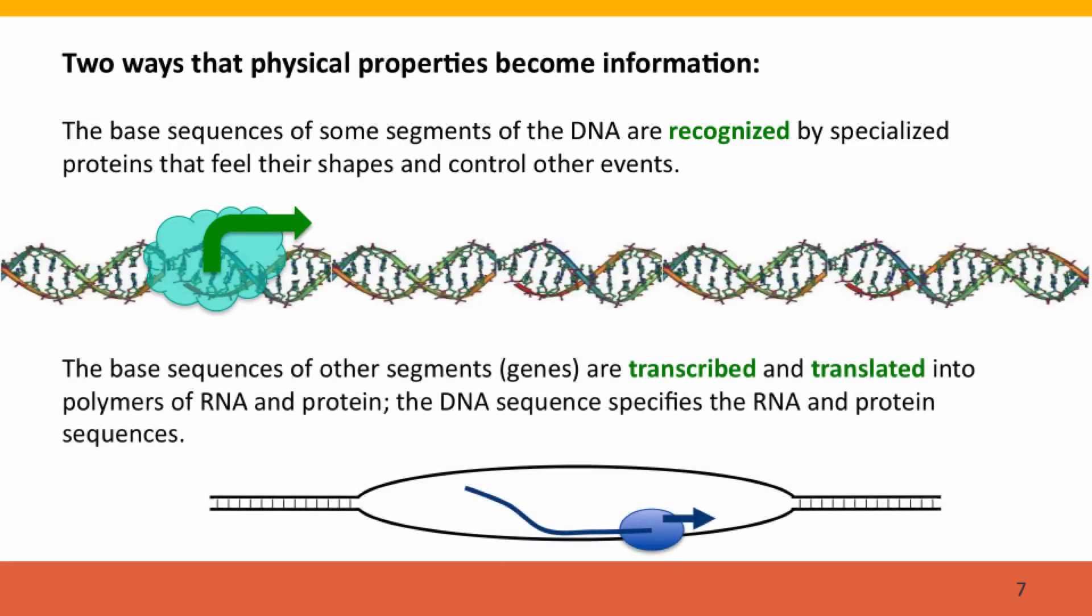Now, the base sequences of other segments code for protein. The way they do that is that they undergo processes called transcription and translation into other polymers: the informational polymer RNA, which we'll describe in the next lecture, and protein, which we'll talk a lot about in Module 3. The DNA sequence specifies the sequence of these molecules.